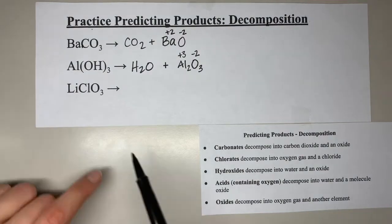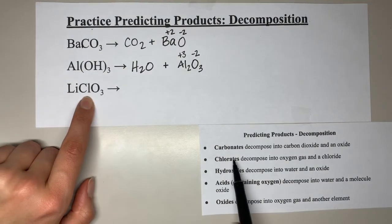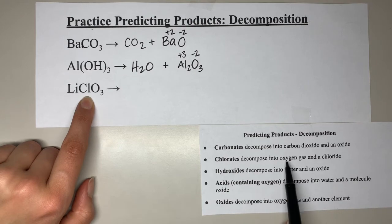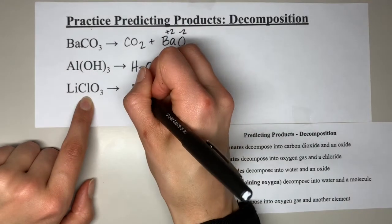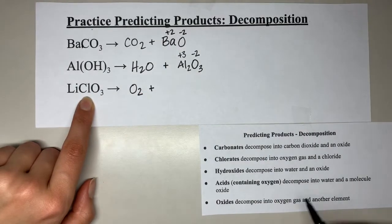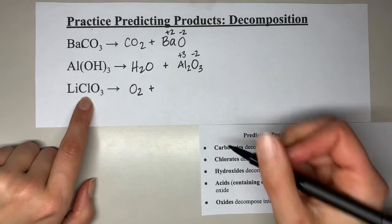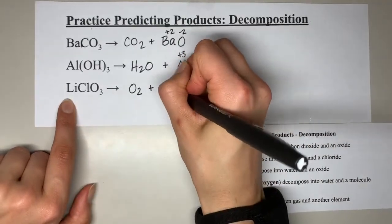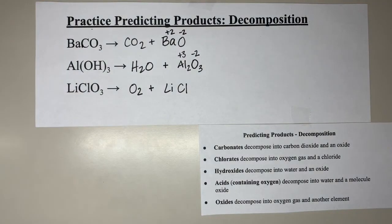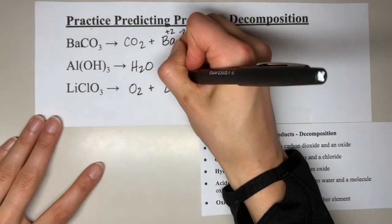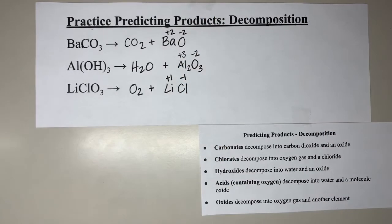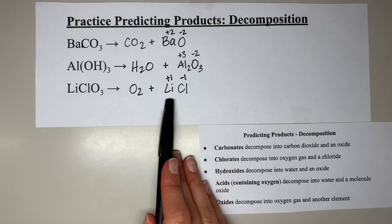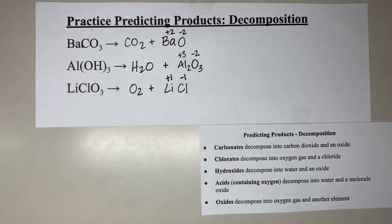The last one is lithium chlorate. Chlorate is on the list — chlorates decompose into oxygen gas, O₂, and a chloride. A chloride is something bonded to chlorine; in this case it's the lithium. We crisscross: lithium is +1, chlorine is −1 — equal and opposite, they cancel out, leaving us with LiCl. And that is how you predict products for decomposition reactions.